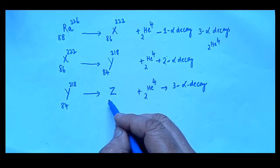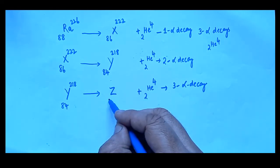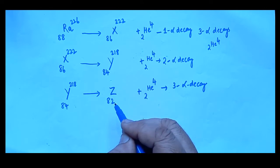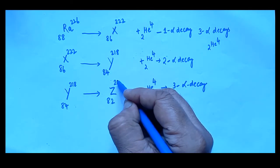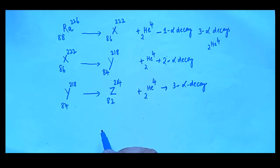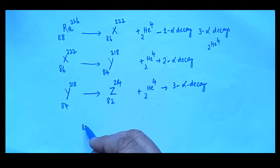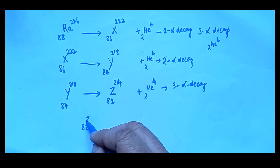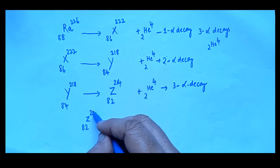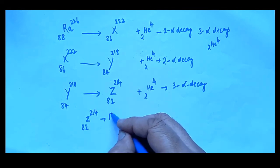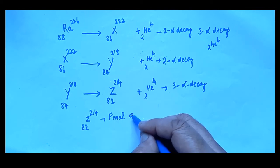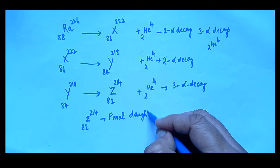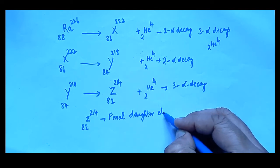What would be the atomic number of Z? The atomic number reduces by 2 units, giving 82. The mass number is reduced by 4 units, giving 214. So the final daughter element Z has atomic number 82 and mass number 214.